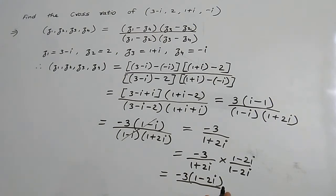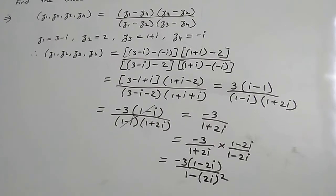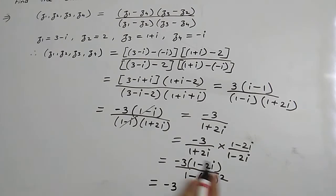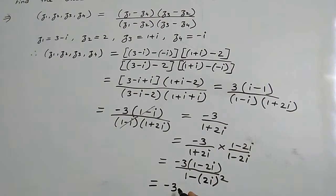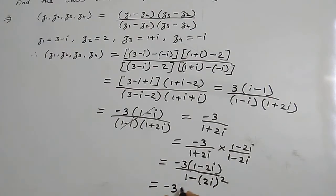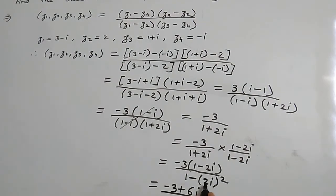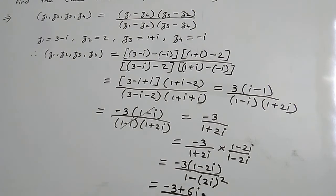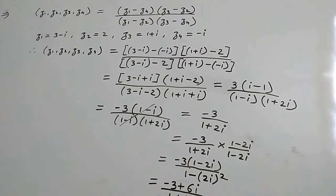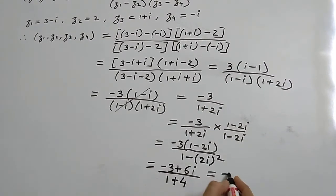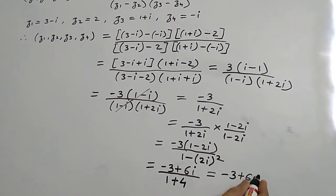This gives -3(1 - 2i) in the numerator. Using (a + b)(a - b) = a² - b², the denominator becomes 1 - (2i)². So we have -3(1 - 2i) upon [1 - 4i²]. Since i² = -1, this equals -3 + 6i upon 5.